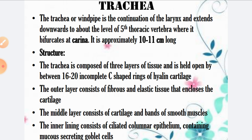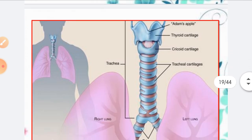The middle layer consists of cartilage and bands of smooth muscle. The inner lining consists of ciliated columnar epithelium containing mucous-secreting goblet cells. In the respiratory system, the epithelium is always mucous-secreting; goblet cells are present in between the columnar epithelium.